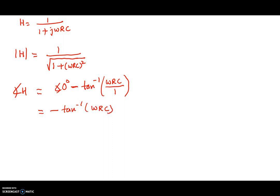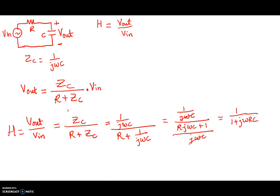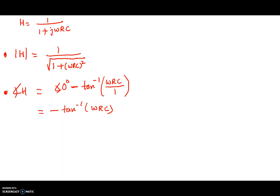Both the magnitude and the angle have the ω term in them, so the circuit responds differently to signals of different frequencies. Let's see what the magnitude of the transfer function is for DC — meaning the signal is not varying, so ω equals 0. If ω equals 0, the transfer function equals 1 over the square root of 1 plus 0, which gives us 1.